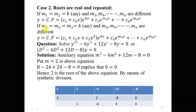And if suppose m1 = m2 = m3 = k, and m4, m5 and so on up to mn are different roots, then the complementary function will be equal to (c1 + c2x + c3x²)·e^(kx) + c4·e^(m4x) + ... + cn·e^(mnx).